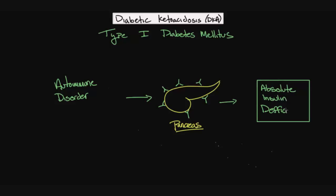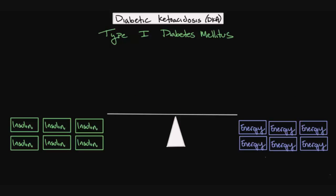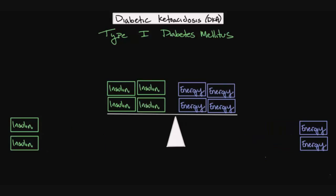But what exactly does this mean for the body? To get a better understanding, let's think about insulin requirements as a balancing act with energy needs. Now, the goal here is to keep the balance in balance. As the energy requirements of the body go up, insulin is needed to take the glucose out of the blood and store it throughout the body. Normally, in individuals without type 1 diabetes, the pancreas is able to produce enough insulin to keep up with any amount of energy requirement.